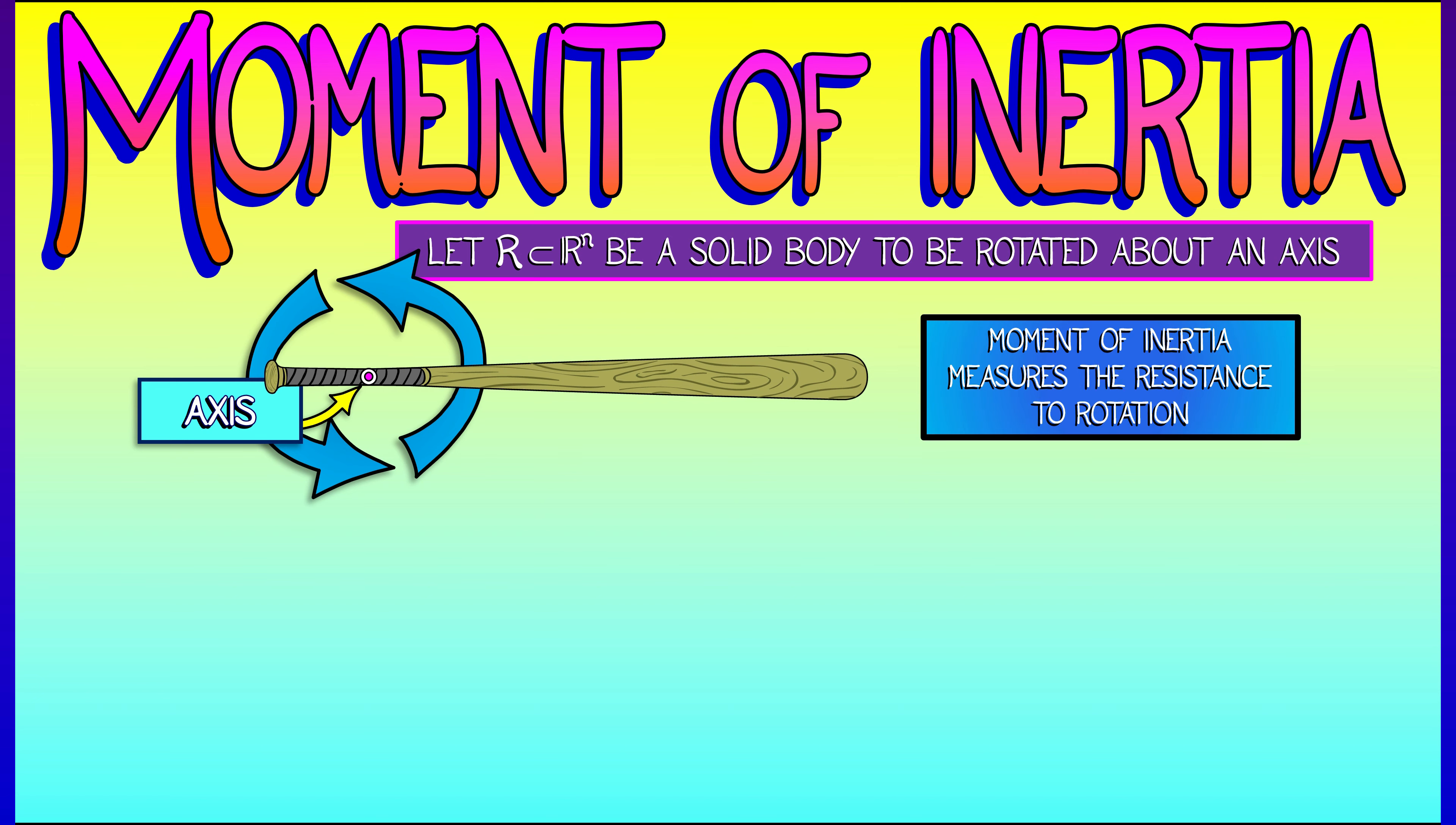So think of a baseball bat or a tennis racket or your favorite sword, something like that. Then the moment of inertia is something that measures the resistance to rotation about that axis. It's kind of like an angular mass.